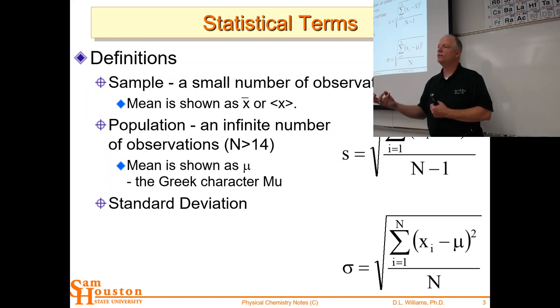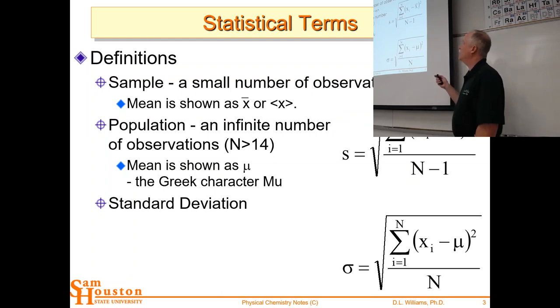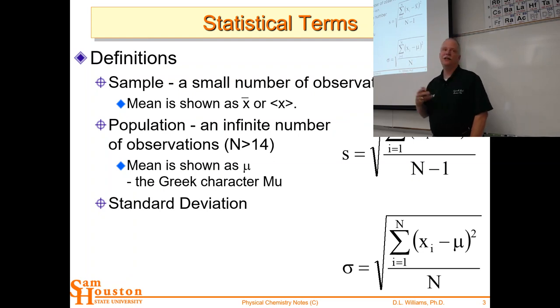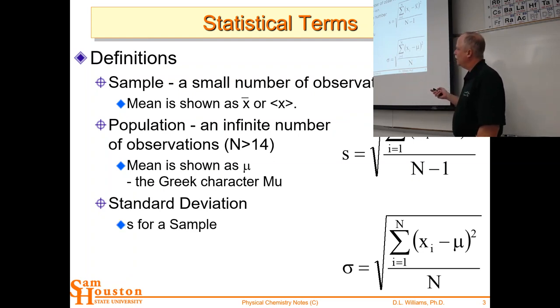So we square them, sum them, divide by the number of data points, and then we take the square root. And so it's like an average deviation. We call it the standard deviation so that we don't confuse people with using average twice. We have the average and we have the standard deviation. Now, we talk about this n minus 1 when we have a small number of data points, less than 15, because we've removed one degree of freedom by taking the average. So we need two data points at least to calculate the average, and then we need a third, essentially, to get a good standard deviation.